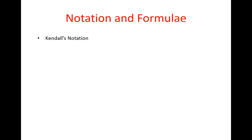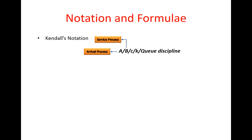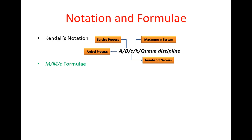I'd like to do a quick review of the notations and queuing formulas we use. We have Kendall's notation, which has five parts: the arrival process (Markovian or other stochastic processes), the service process, the number of parallel servers or station capacity, the maximum number in the system (default is infinity, so usually omitted), and the queuing discipline — FIFO, last-in-first-out, shortest processing time, and so on.